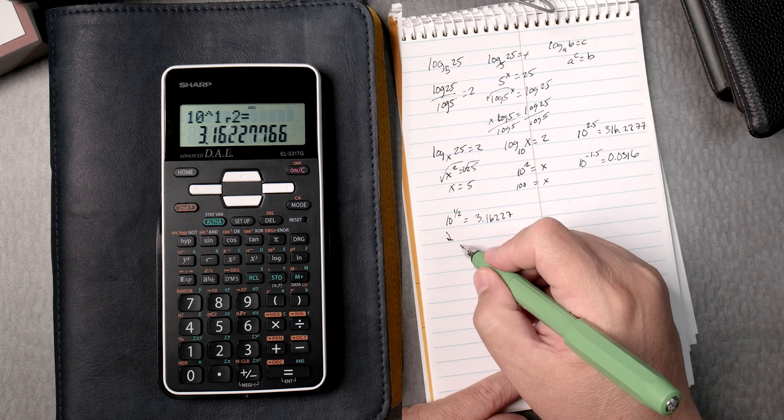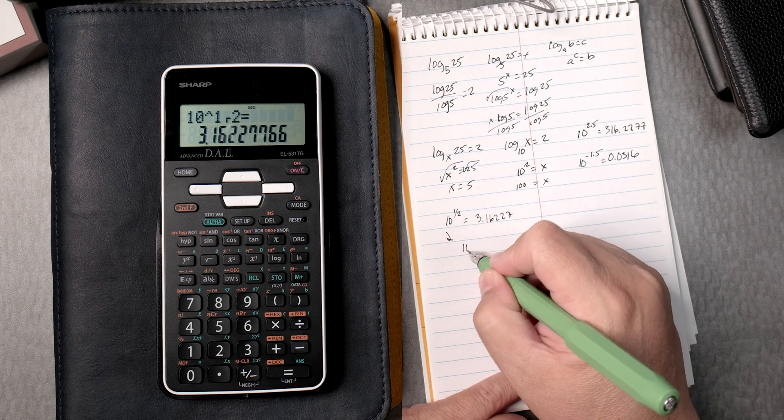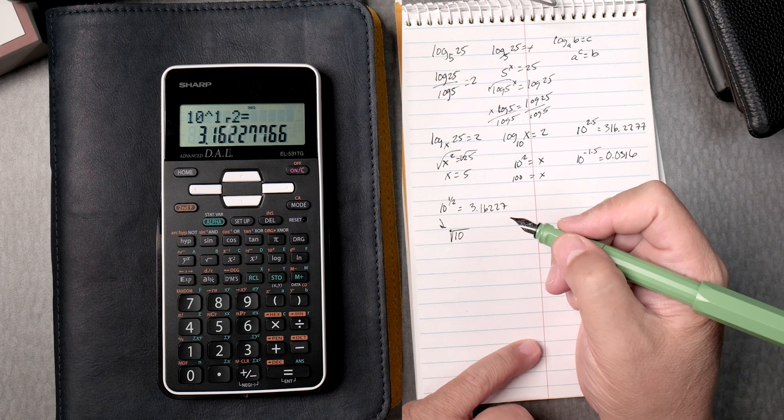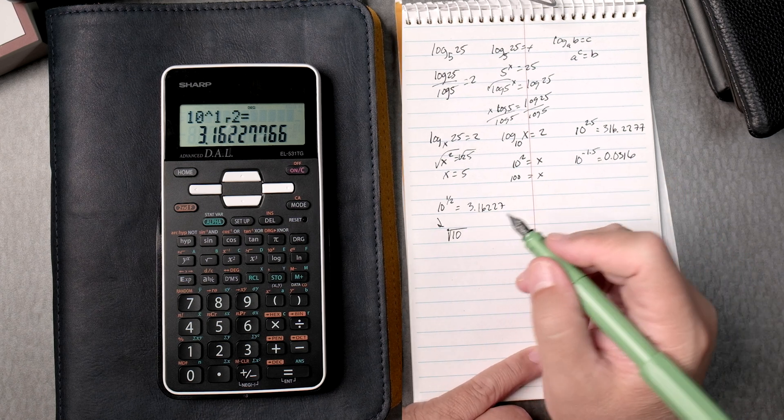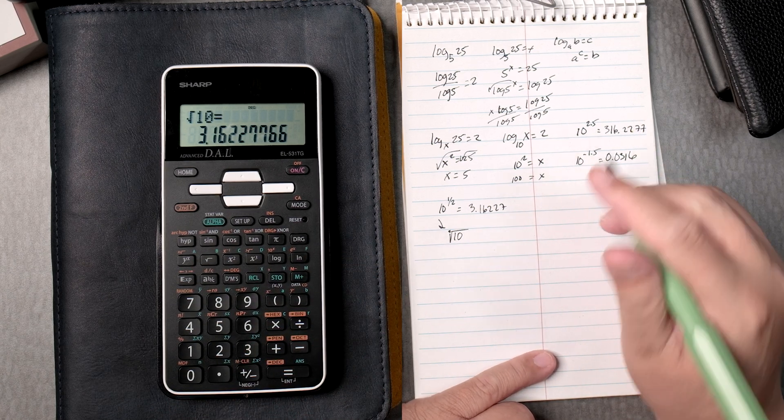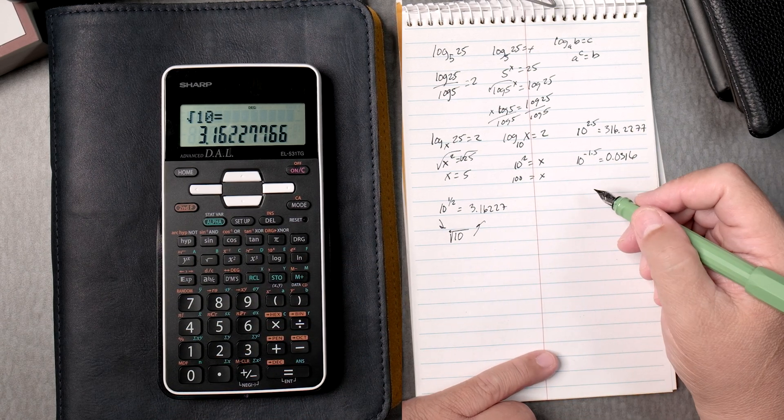Here, 10 to the 1 half really is 10 square root. Where that 2, it has an index of 2. You can barely see it there. So that means, if I take the square root of 10 equals, it gives you the same answer. Awesome.